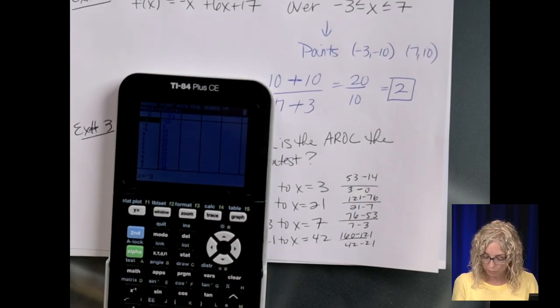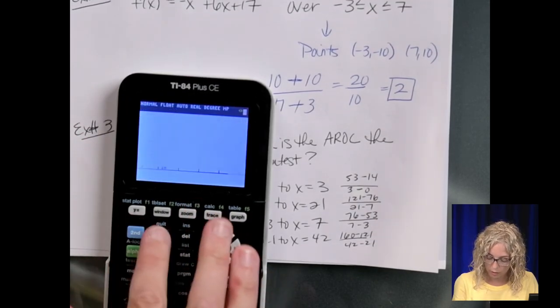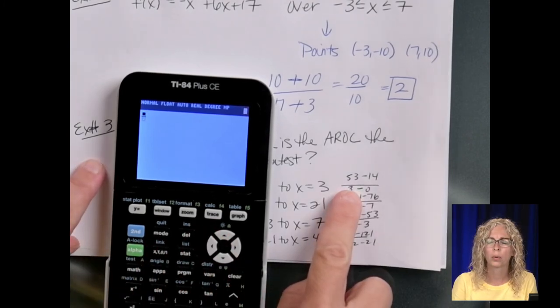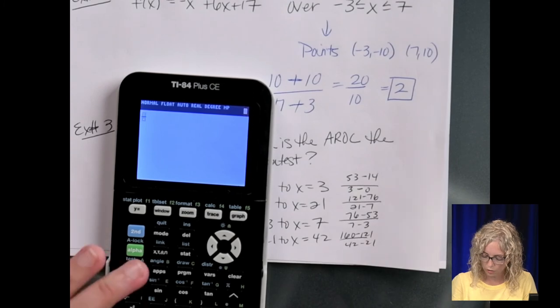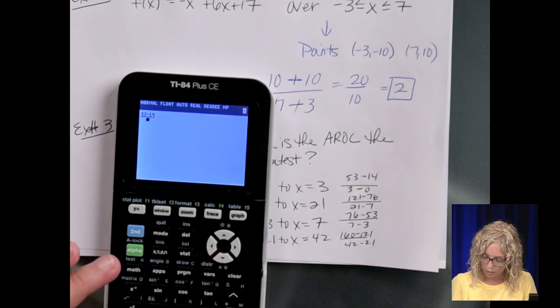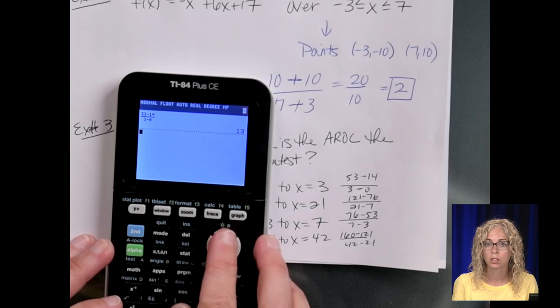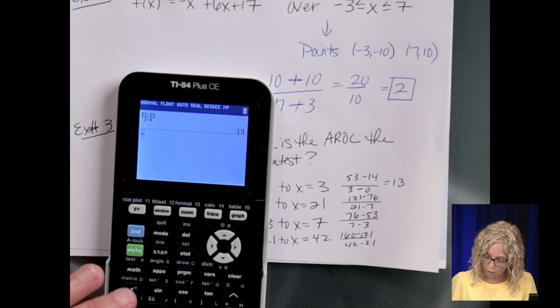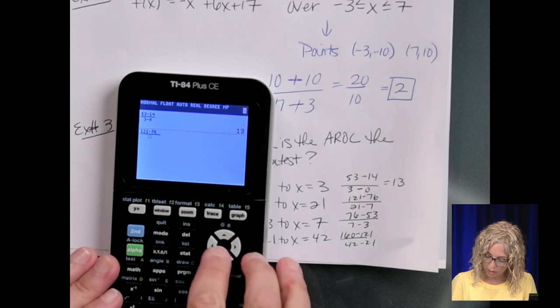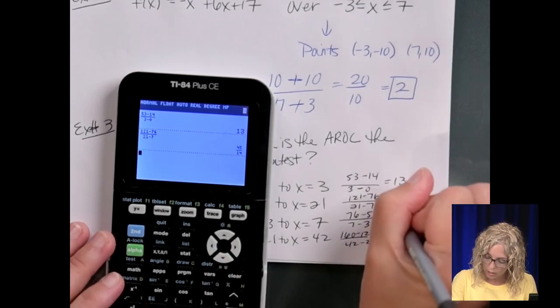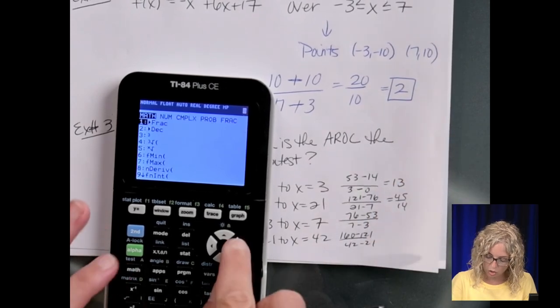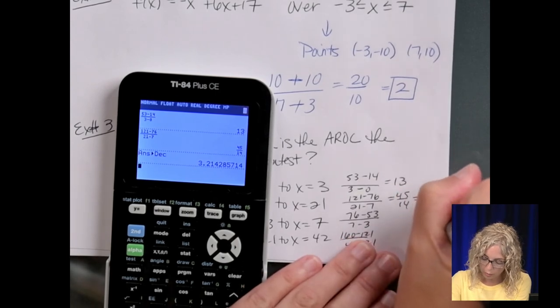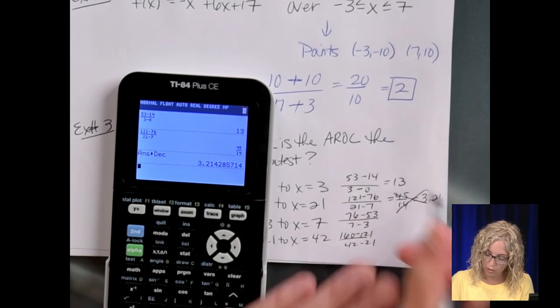And then you can go to the calculator, you can do the math. So, 53 minus 14, up top, 3 minus 0, enter, 13. So, this was 13. 121 minus 76, up top, and then 21 minus 7, is 45 over 14, but let's change that to a decimal, so we can actually compare. So, 3.21, that's out, because 13's bigger.